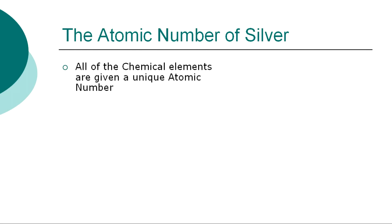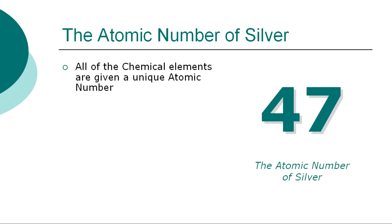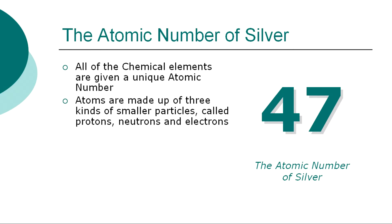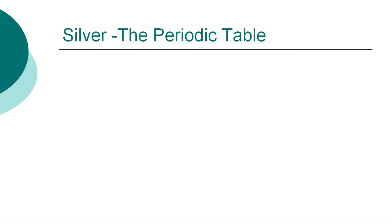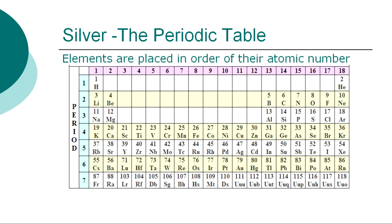All of the chemical elements are given a unique atomic number. The atomic number for silver is 47. Atoms are made up of three kinds of smaller particles called protons, neutrons, and electrons. The atomic number is the number of protons in the atom. The chemical elements of the periodic table are shown in order of atomic number and identified by their symbol. The periodic table is a chart showing the symbols and the atomic numbers of all known elements, such as silver, in one large grid.